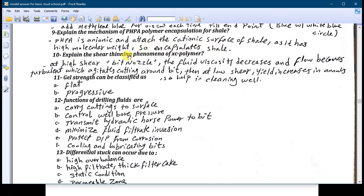Question ten: explain the shear thinning phenomena for the XC polymer. At high shear rate which is at the bit nozzle for example, the fluid viscosity decreases and its flow becomes turbulent like the water for example, which agitates the cuttings around the bit. And then at low shear, like for example in the annular, the yield increases again in the annulus, so it helps in cleaning the well.